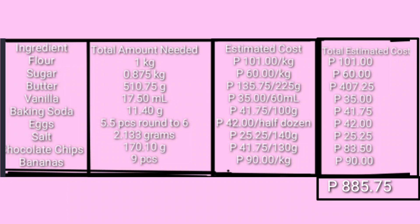We now have the final budget proposal with the estimated cost of the ingredients. Flour: 101 pesos. Sugar: 60 pesos. Butter: 407.25 pesos. Vanilla: 35 pesos. Baking soda: 41.75 pesos. Eggs: 42 pesos. Salt: 25.25 pesos. Chocolate chips: 83.50 pesos. Bananas: 90 pesos. The total estimated cost for all the ingredients is 885.75 pesos.